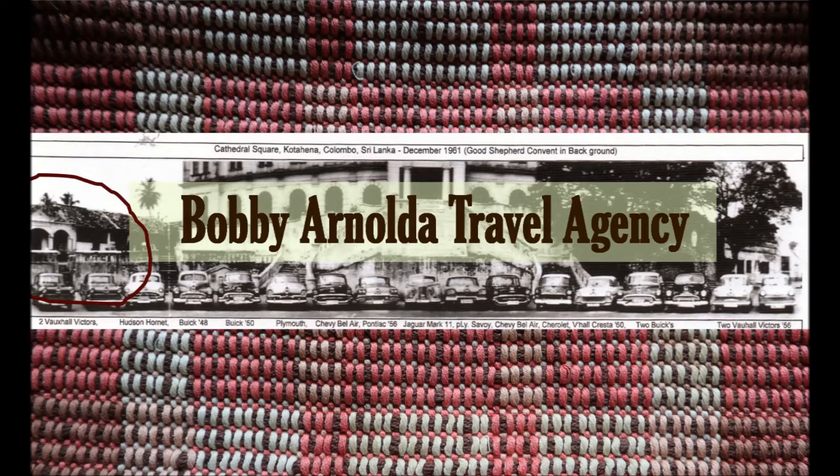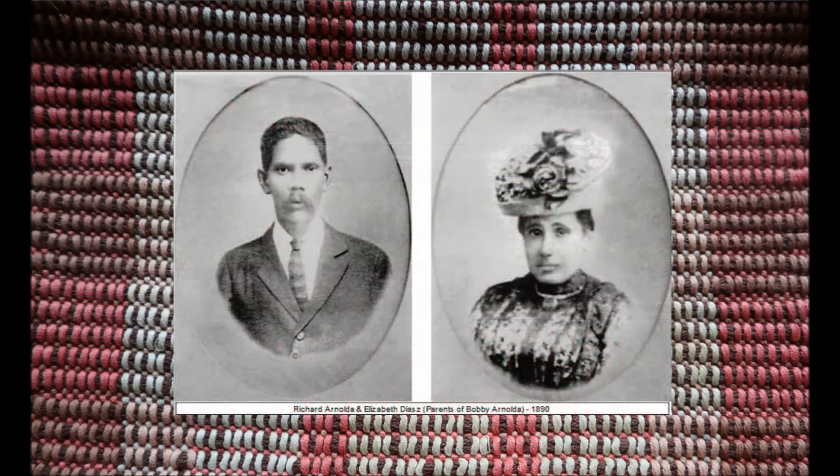And I was curious to know if there's any more about Bobby Anolda on the internet. So that led me to a photography website with an archive of old photos from Sri Lanka, including this one. And these are Bobby Anolda's parents. So they were also my grandmother's parents. And that makes them my great grandparents. I've never seen a photo of them before. And I just can't help looking at them and wondering, were they really wearing those clothes in Sri Lanka?